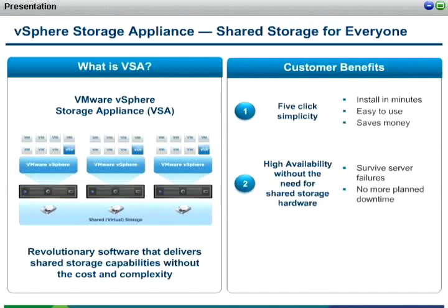In addition to five-click simplicity, we're also looking at high availability without the need for shared storage. One of the things that usually happens with customers of a certain size, generally a two-node or three-node configuration, is they could care less about server consolidation. They're not looking to virtualization to provide consolidation; what they're looking to do is provide better availability characteristics. Without shared storage, we're not able to provide our HA technology to handle the failover of a vSphere host or a virtual machine. With the VSA, we're able to provide HA function to all of those machines in the environment.